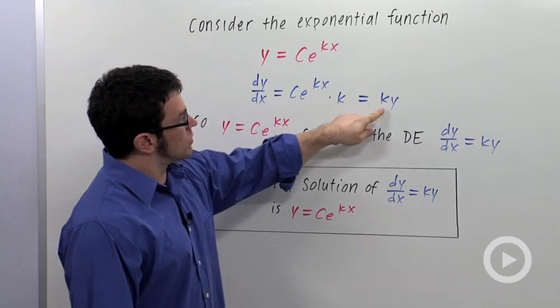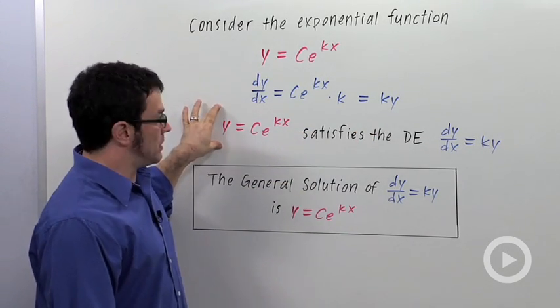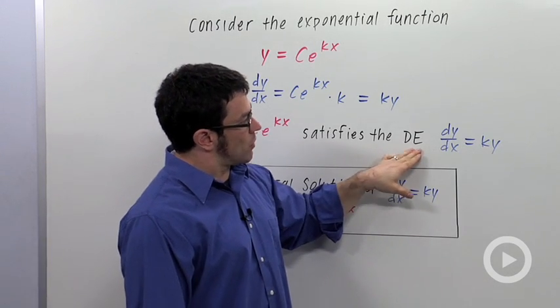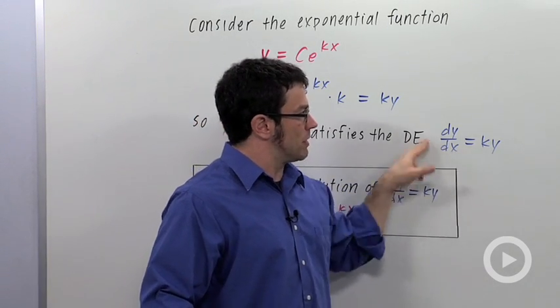So dy dx equals k times y. And that means that our original exponential function satisfies the differential equation dy dx equals k times y. This is a very important differential equation.